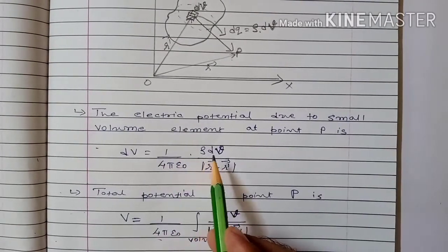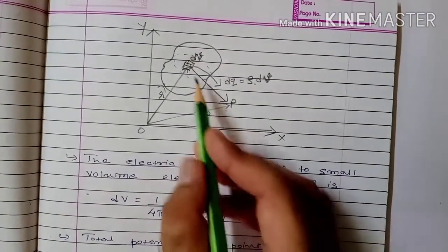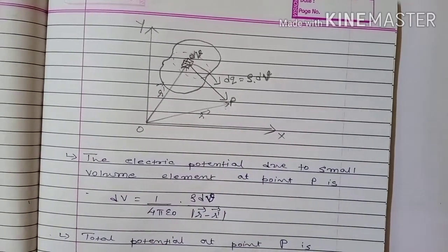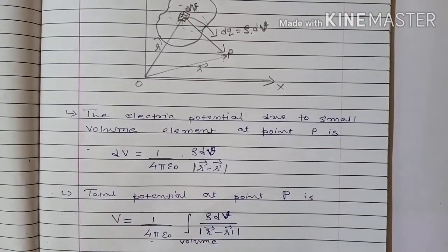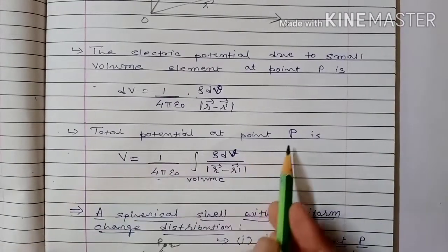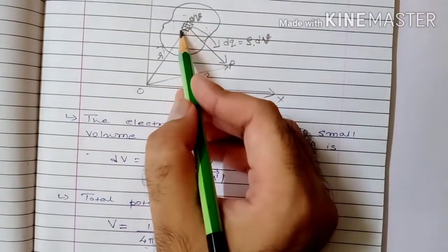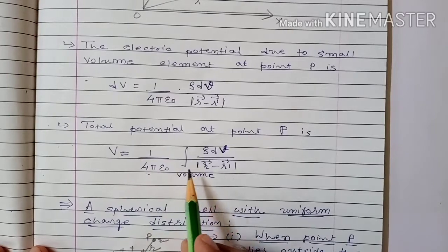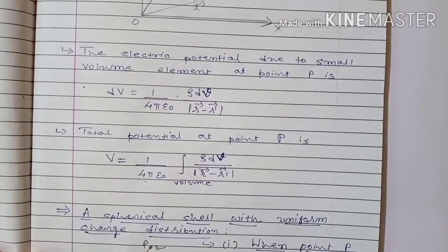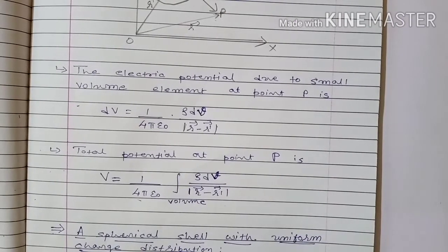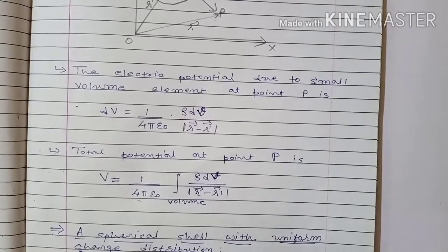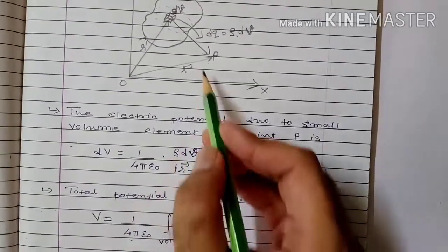The electrostatic potential at point P due to the charge in the small volume element dV equals 1 upon 4π ε₀ into ρ dV upon |R − R'|, because the distance between point P and the small volume element is the magnitude of (R − R'). Total potential at point P is the summation of these small potentials: V = 1/(4π ε₀) × ∫ ρ dV / |R − R'|. This is a volume integration. For line charge distribution, take line integration; for surface distribution, take surface integration.